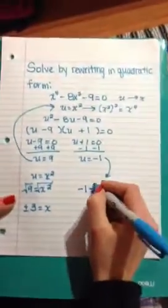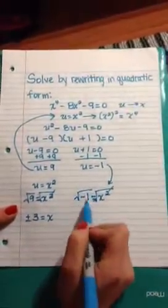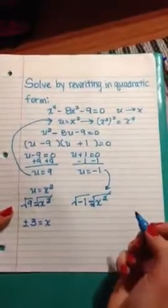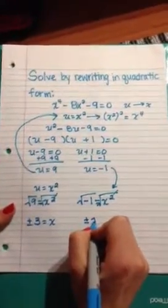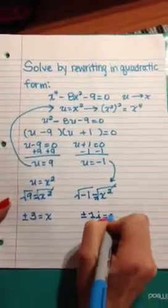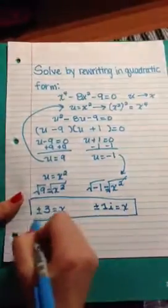And on this side, when we square it, this will cancel, but you cannot have a negative in the square root, so that will be the i. And in this case, it will be the same thing: plus or minus 1i equals x. And here are the two answers.